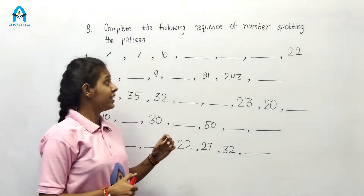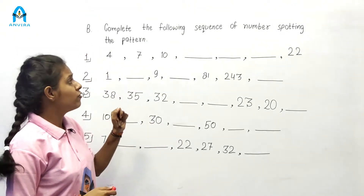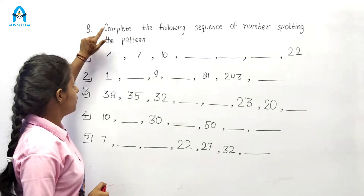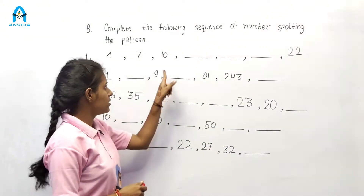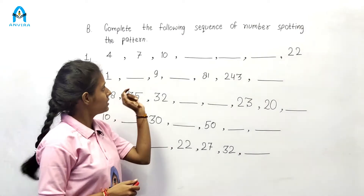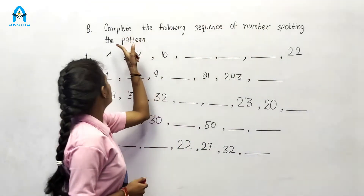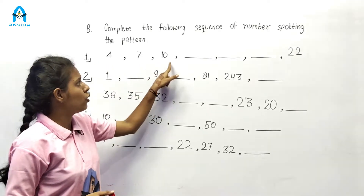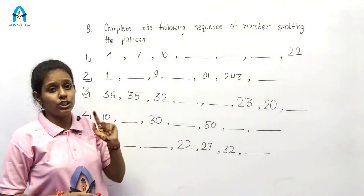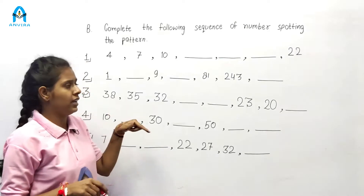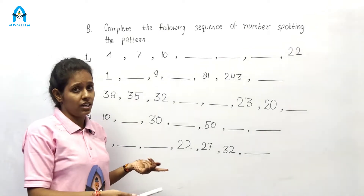Hello students, myself Ayushita. I welcome you on Envera Online School. Today we will start our next question, question B. First read the question: complete the following sequence. You have to complete this sequence by filling in the blanks with numbers supporting the pattern. First find the relation between the given numbers, then fill in the blanks with the same relation.